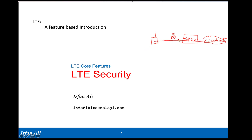In order to set up this user plane and to control how it is used, we have the Mobility Management Entity, the MME. The mobile has signaling connections with the MME. It also has a signaling connection with the base station called the Radio Resource Control, and the connection with the MME is called the Non-Access Stratum.